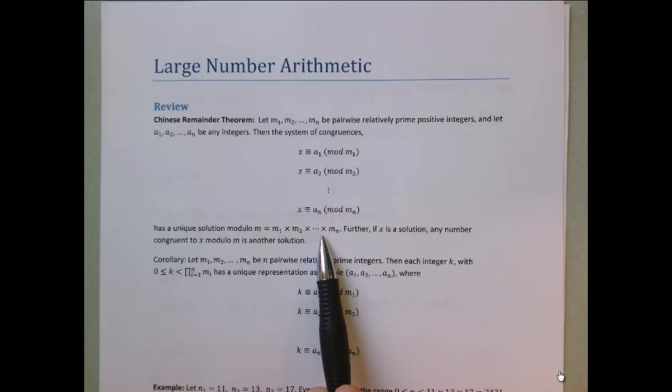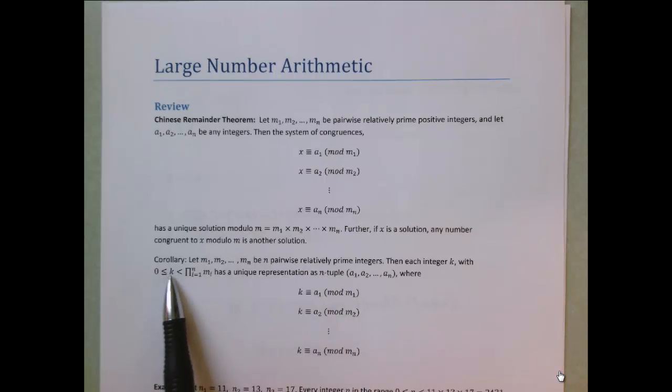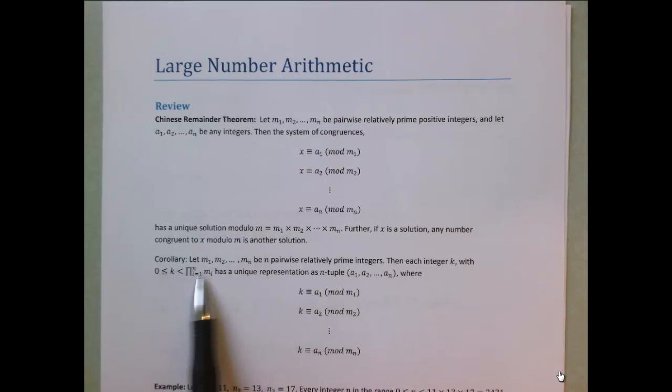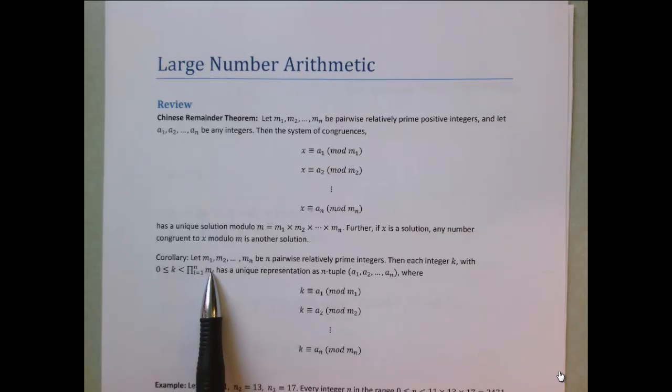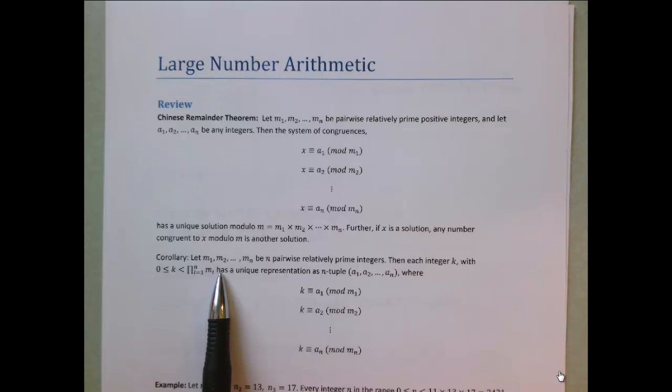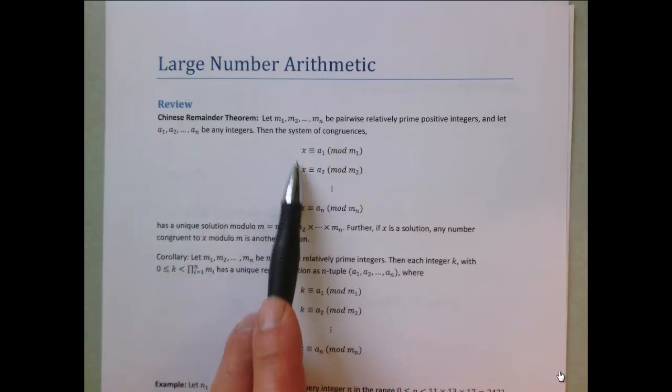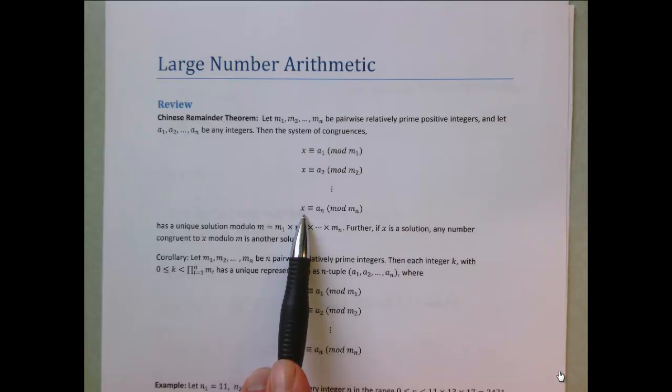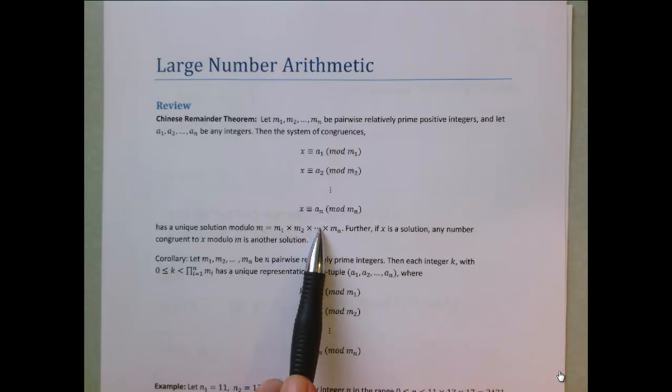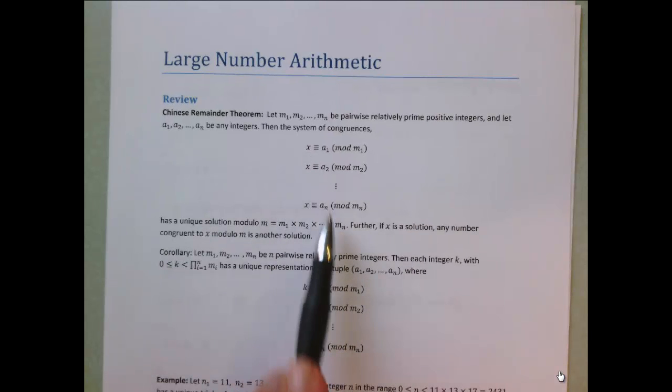We get as an immediate corollary that every integer in the range from 0 through the product of the moduli, not including that upper limit, has to have a unique representation of remainders when we divide by m1, m2, etc. There have to be unique solutions to this system of linear equations. Therefore, any two distinct x's in this range could not possibly solve the same linear congruence, and therefore the collection of remainders as an ordered n-tuple must be unique.